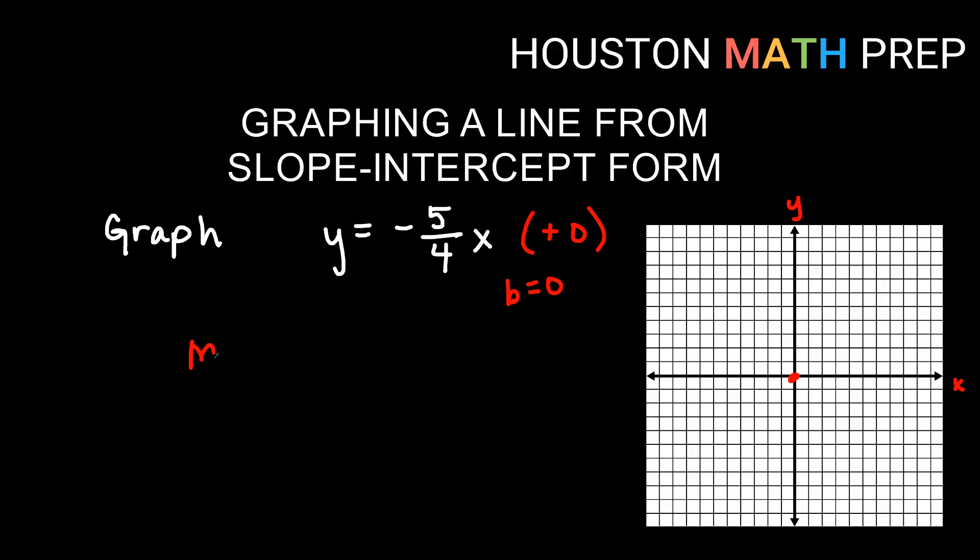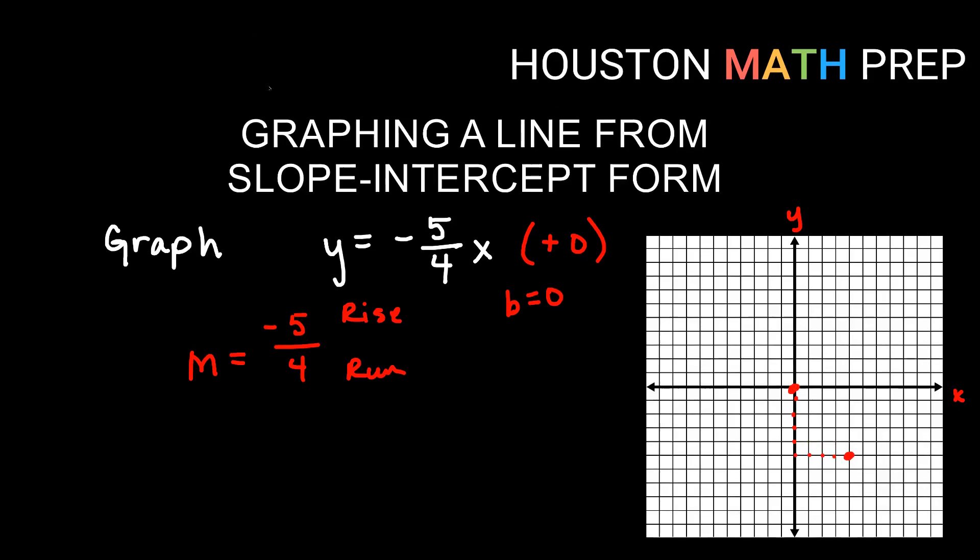Here, our slope is negative five over four, so I will think of the negative with the five, and I'll consider the four to be positive. So when we're looking at rise and run, my rise is actually a negative five, meaning we go down five. So one, two, three, four, five. Run going four, positive four is to the right. So we have down five and over four, and it gives me that point there. And just like before, we can go ahead and draw our line through those points.